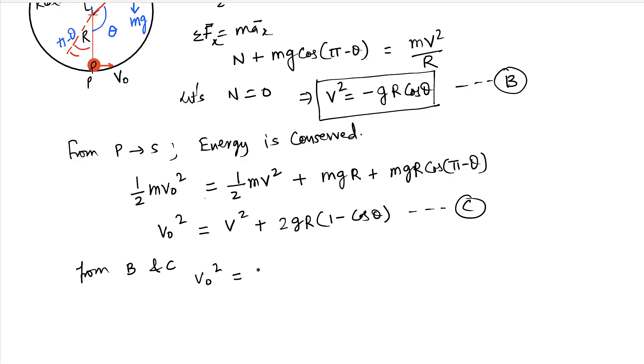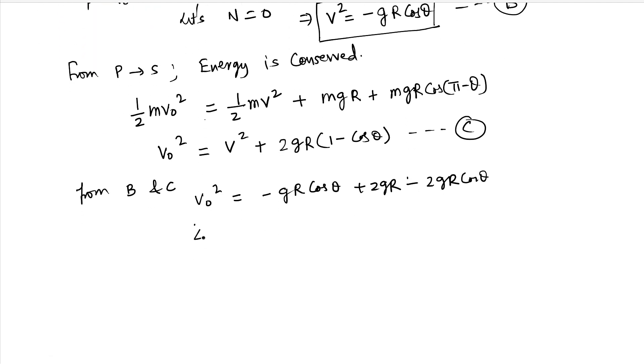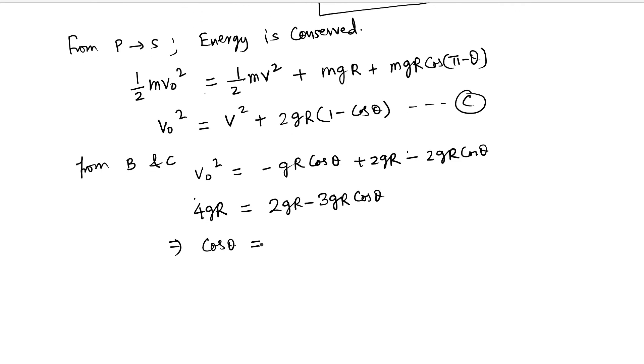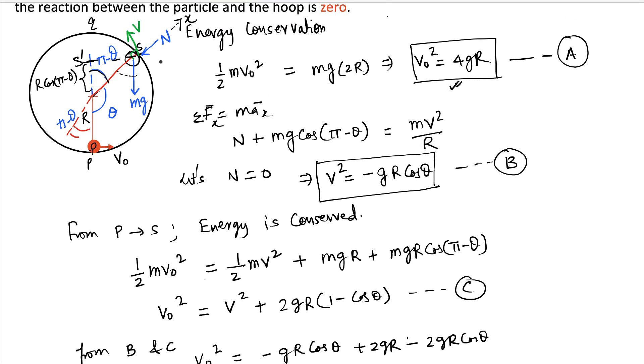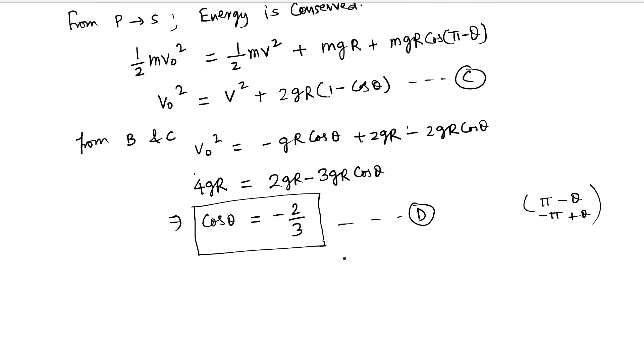From equations B and C, V0 square is minus gr cos theta plus 2gr minus 2gr cos theta. V0 square is nothing but 4gr, so we can write 4gr equals 2gr minus 3gr cos theta, and therefore cos theta is minus 2 by 3. So now we got the theta at which the reaction force will be zero. And if you see, this cos theta can be pi minus theta or minus pi plus theta because it's negative. You can figure that out.